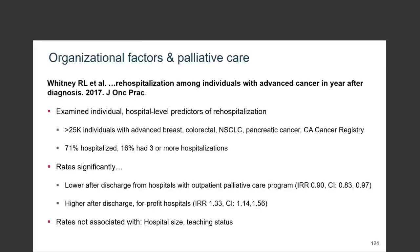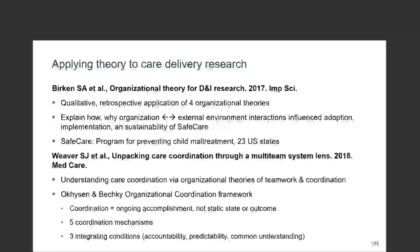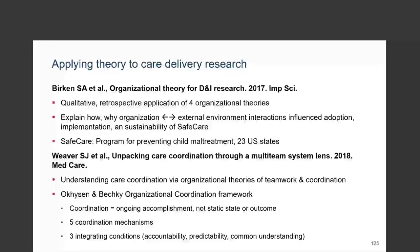Last but not least, I'd be remiss if I didn't point out two papers that applied different types of organizational theory to care delivery research — both were pre-read materials. The first is a really nice piece of work done by Sarah Birkin and collaborators, many of whom are here in the room, where they retrospectively applied four different organizational theories to understand how and why organizations interact with their external environment and how that influenced the adoption, implementation, and sustainability of SafeCare — an evidence-based behavioral parent training model implemented in 23 U.S. states. If you're interested in talking more about these, join us for discussion group one this afternoon.